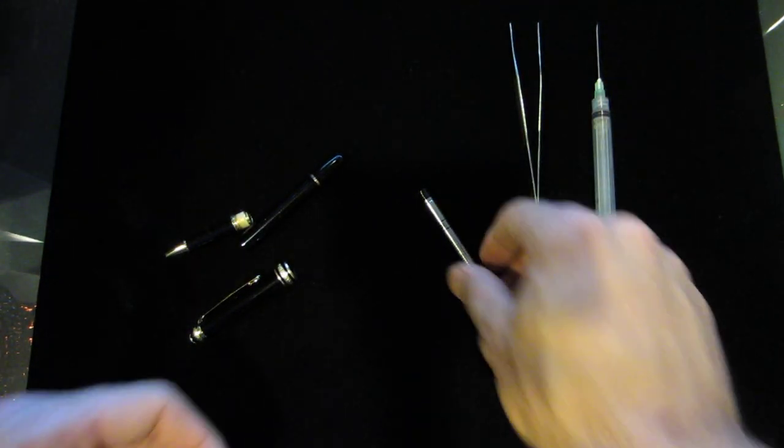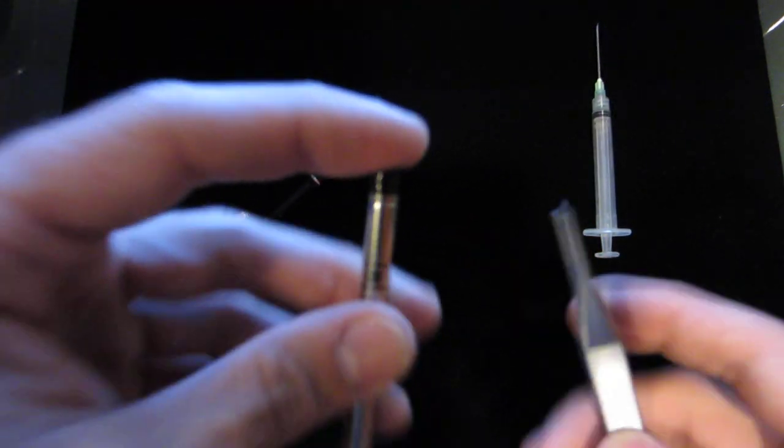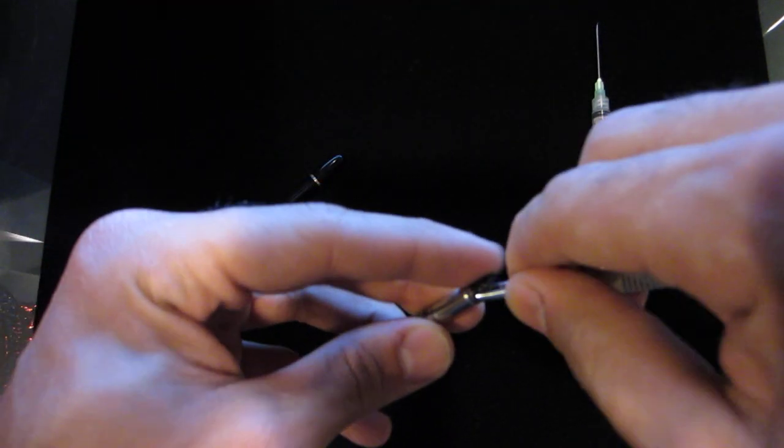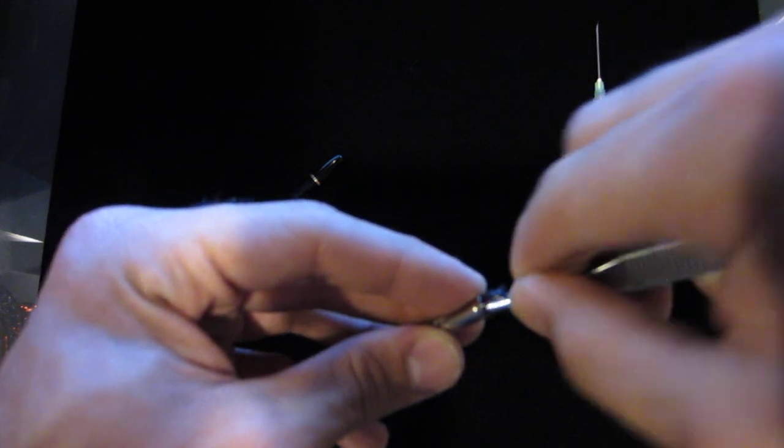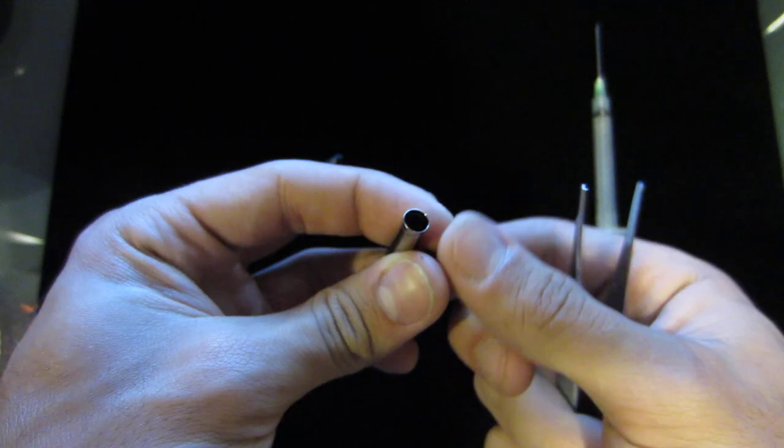So, what you're essentially going to do is, first things first, this black cap that's on the back of it, you're going to grab it and just wiggle it back and forth, just like this, until it pops out. See? Very easy.